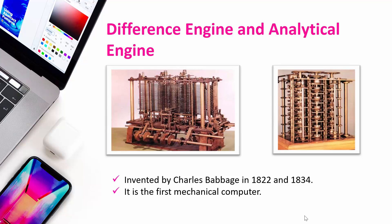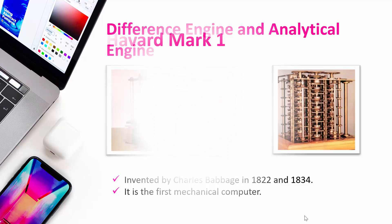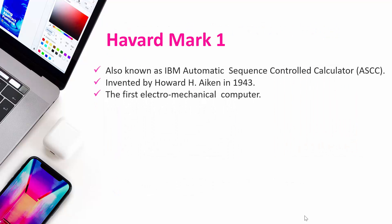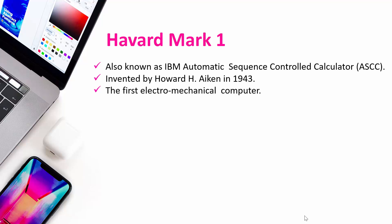The next device is Howard Mark 1, also known as the IBM Automatic Sequence Control Calculator (ASCC). It was invented by Howard H. Aiken in 1943. Remember this: it was the first electromechanical computer. From here, the beginning of modern computing started.